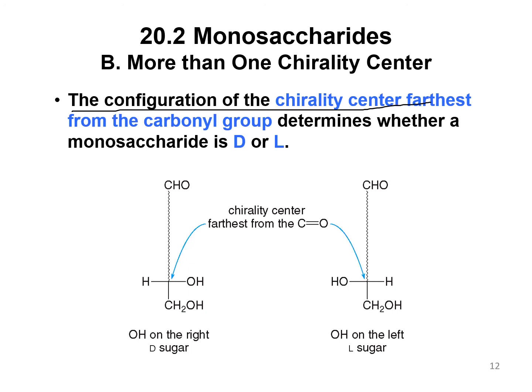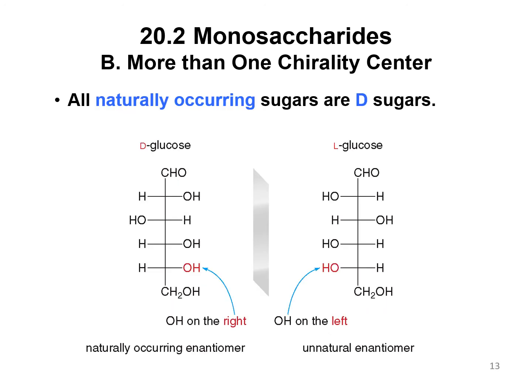To determine the configuration — whether it's D or L — we look at the chiral center farthest from the carbonyl group. In a D sugar, that farthest chiral center has the hydroxyl on the right; if it's on the left, it is an L sugar. You need to be able to distinguish between D and L conformations. It is important to note that all naturally occurring sugars are D sugars, so it is D-glucose that we metabolize for energy. This is the naturally occurring enantiomer, and the other is the unnatural enantiomer.